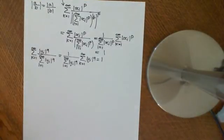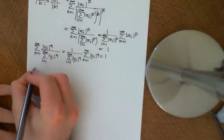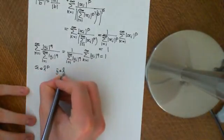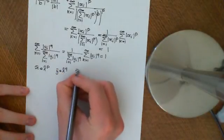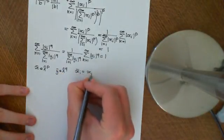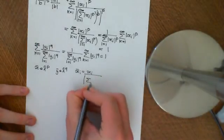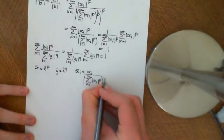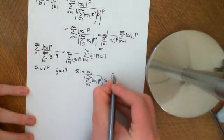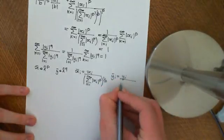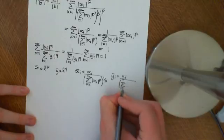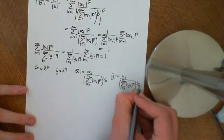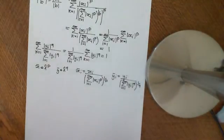So we now know that x̄ is an element of LP and ȳ is an element of LQ, with the definitions that x̄_i = x_i / (sum from i=1 to infinity of |x_i|^p)^(1/p) and ȳ_i = y_i / (sum from i=1 to infinity of |y_i|^q)^(1/q). We'll take a break there and continue this in part 2 of this video.